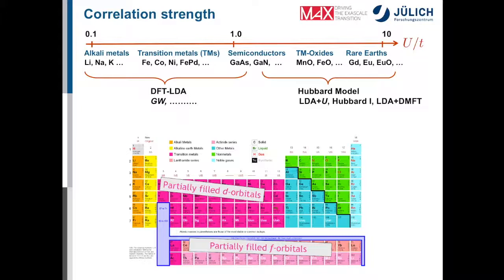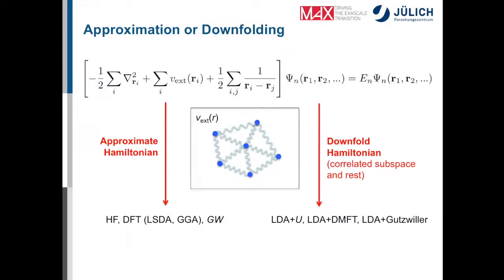Then one very often talks about this ratio, the Hubbard-U parameter divided by the bandwidth as a measure for electronic correlation. So if this ratio is very small, then you have, for example, alkali metals or transition metals, and here we can safely use DFT or GW. However, if this measure is large, then you have rather strongly correlated materials, for example, transition metal oxides and also rare earths.